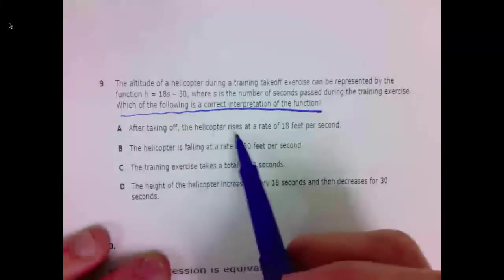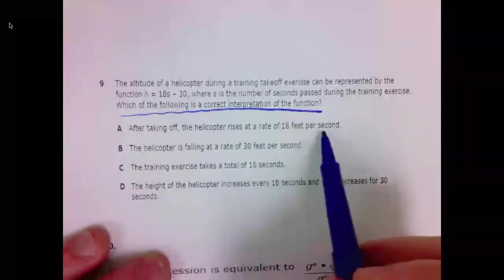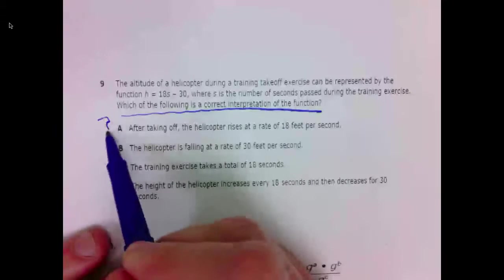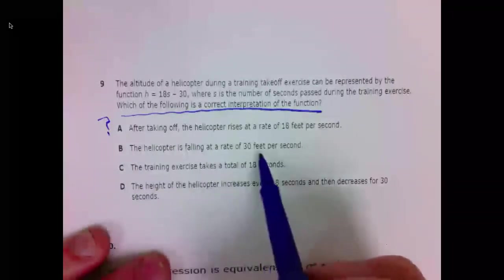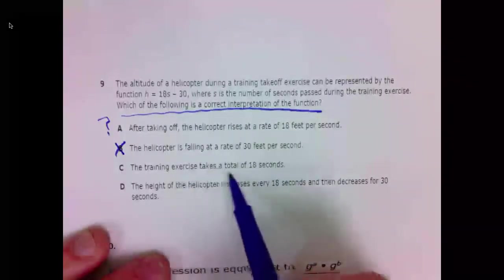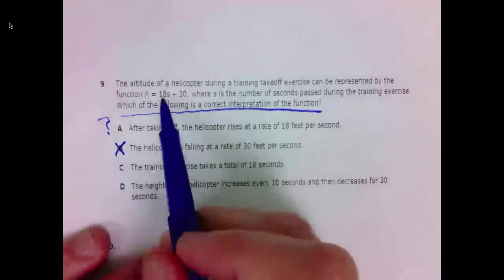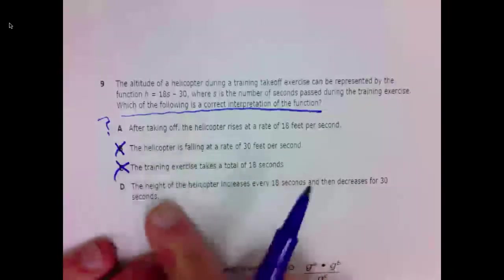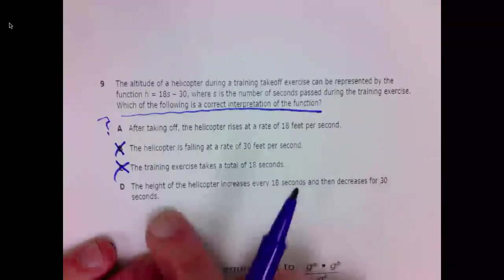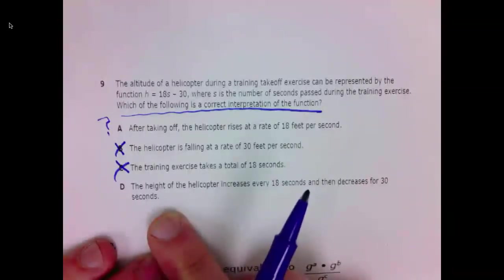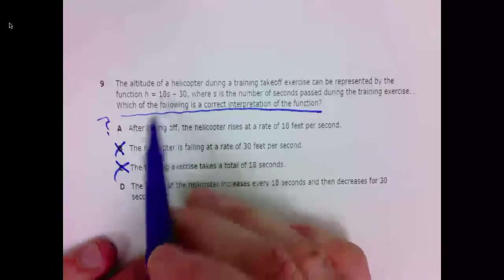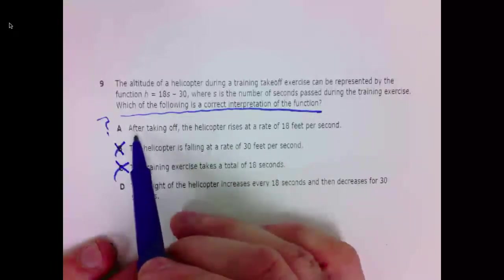After taking off, the helicopter rises at a rate of 18 feet per second. That looks good. That's the slope. I think A is correct. B. The helicopter is falling at a rate of 30 feet per second. No, that's the Y-intercept. Definitely not B. The training exercise takes a total of 18 seconds. No, 18 is the rate. The height of the helicopter increases every 18 seconds. And then decreases for 30 seconds. No, it's 18 feet per second. That's how we interpret the slope here.